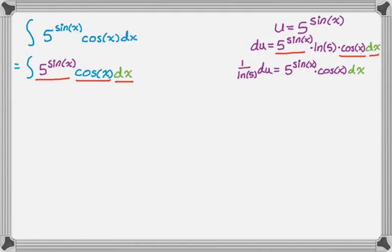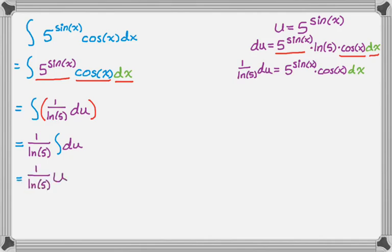And now I'm ready to just make substitution. So I get the integral of 1 over the natural log of 5 du. Rearrange it or pull out the constant again. It's kind of a theme here. The anti-derivative of du is just u. So I get 1 over the natural log of 5 times u. Took an anti-derivative, so plus c.